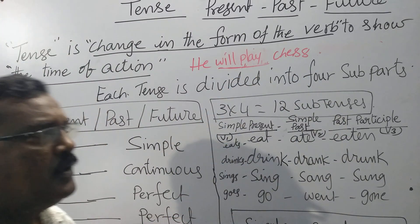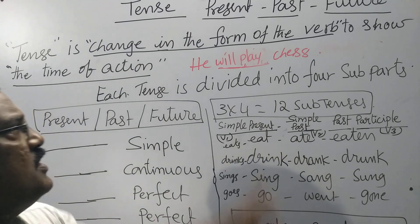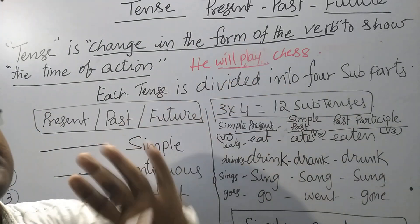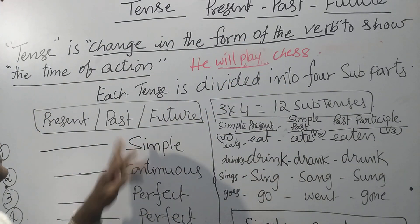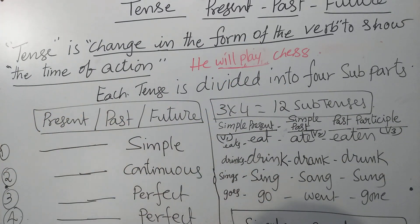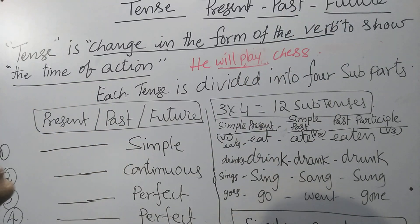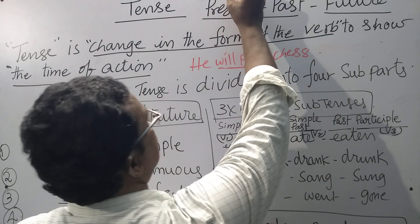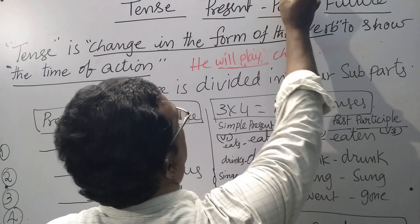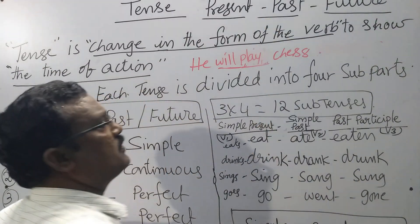So, the definition is correct. Change in the form of the verb — we have to understand. Now, there are three types of tenses in English language: present, past, future.